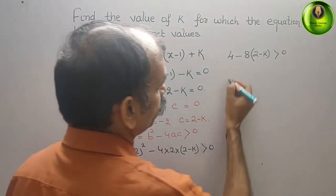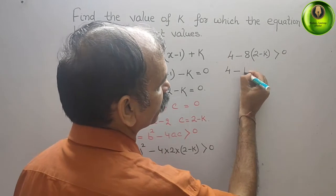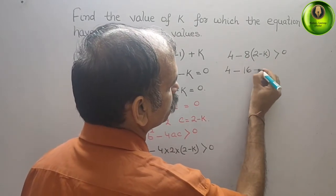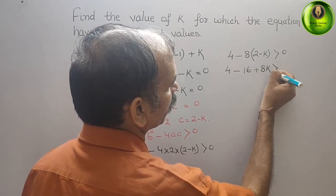Now solve this: 4 - 8 into 2 is 16, minus into minus is plus, you will get 8k. It should be greater than 0.